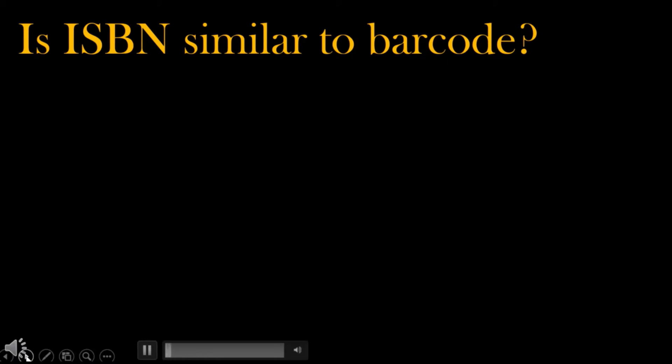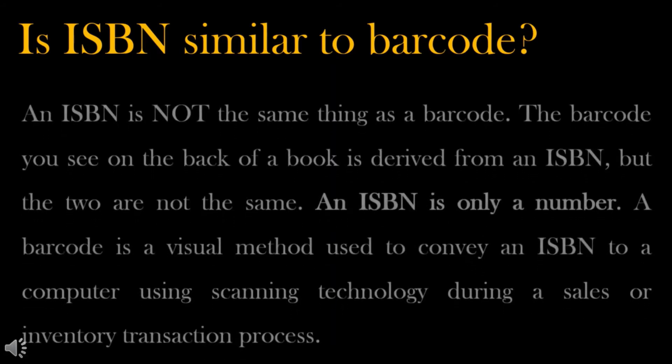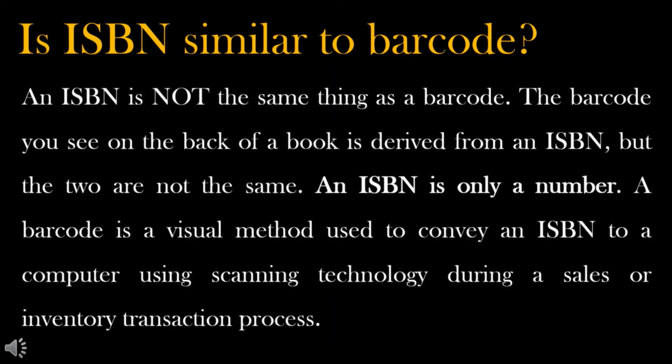Now, the common question is, is ISBN similar to the barcode? The answer is no. An ISBN is not the same thing as a barcode. The barcode you see on the back of a book is derived from an ISBN, but the two are not the same. An ISBN is only a number. A barcode is a visual method used to convey an ISBN to a computer using scanning technology during a sales or inventory transaction process.